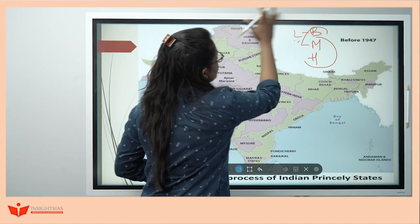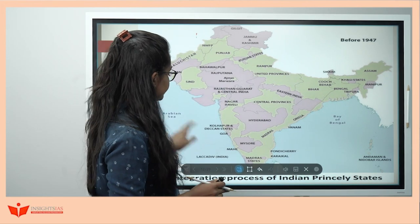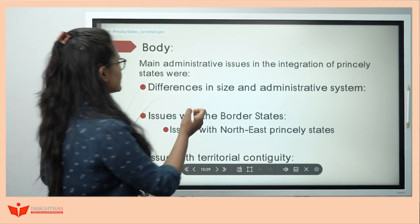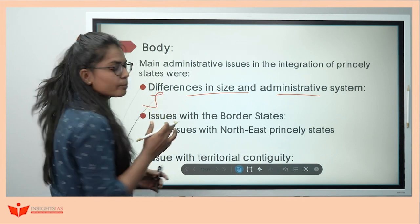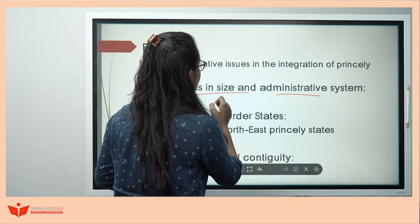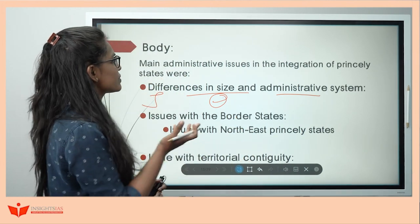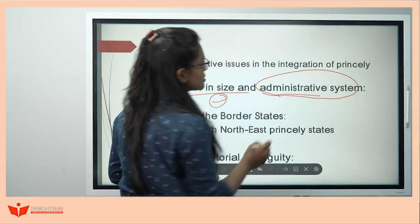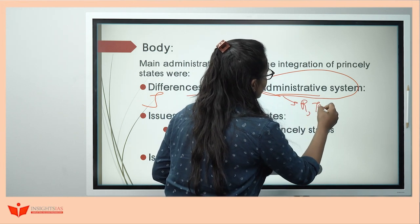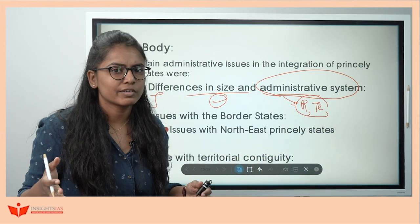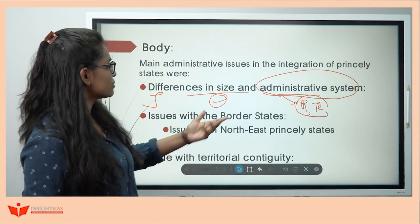I will address administrative issues separately and then socio-cultural problems. For administrative issues, first: differences in size and administrative systems. Jammu and Kashmir was huge, but in Gujarat there were princely states as small as 80 square kilometers. Hyderabad was quite well developed — they had railways, telephone — so the Nawab was very hesitant to give up his territory to mainland India.